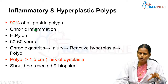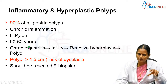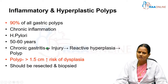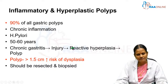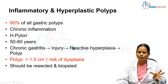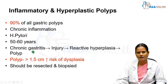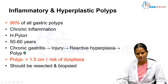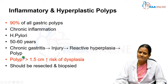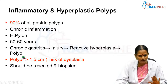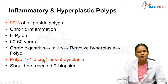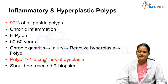Because of chronic inflammation, chronic gastritis occurs which leads to injury. Reactive hyperplasia occurs, leading to protrusion and increased growth of the mucosa, presenting as a polyp. If the polyp is less than 1.5 cm, we need not be concerned. However, if it is more than 1.5 to 2 cm, it carries an increased risk of dysplasia.